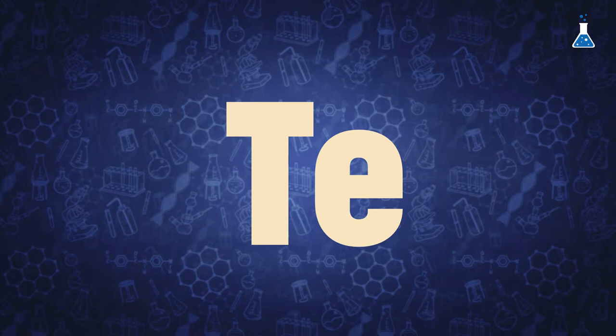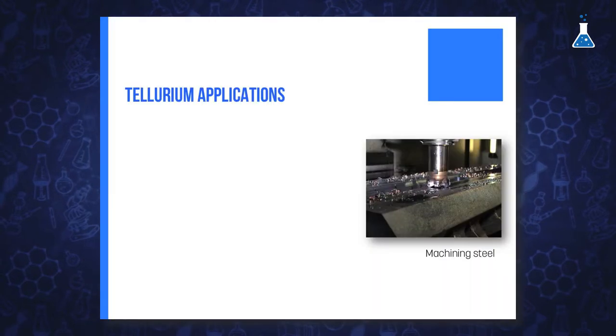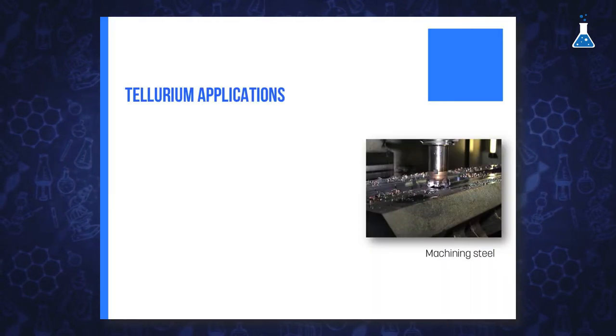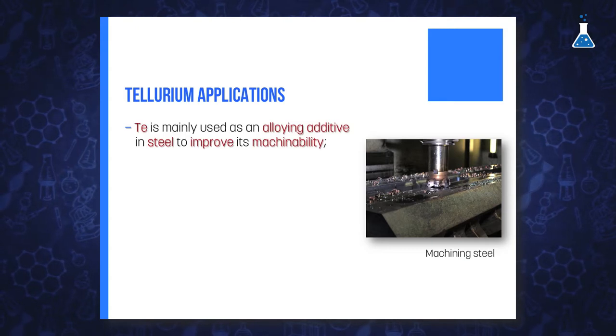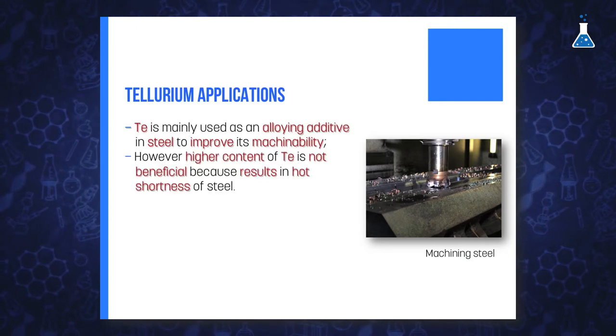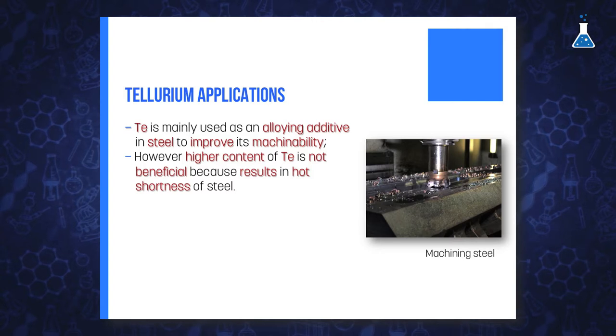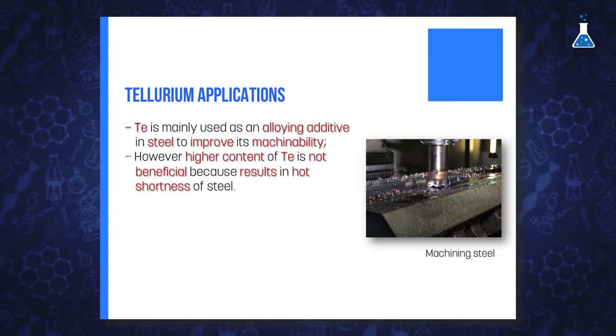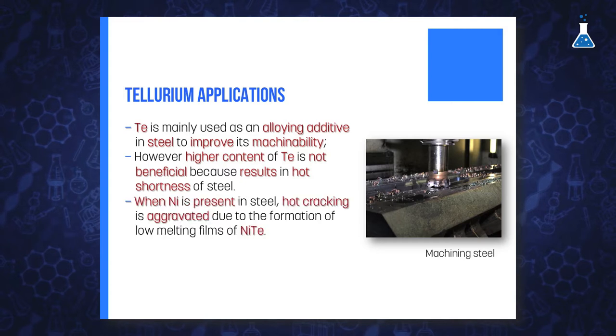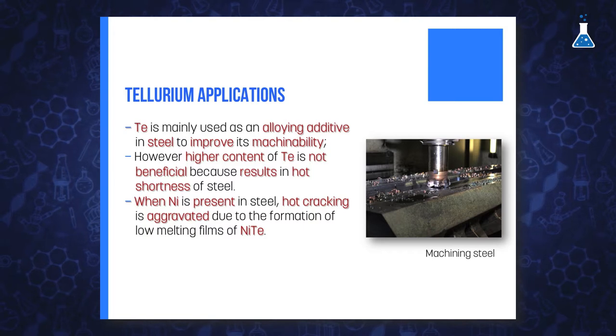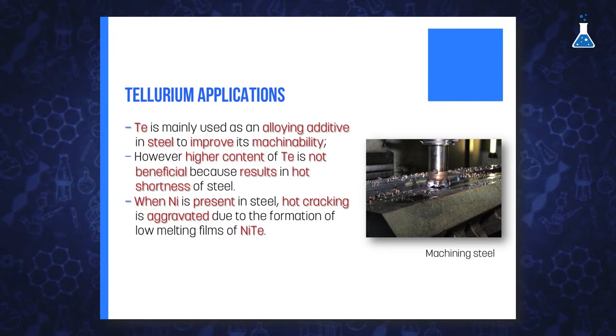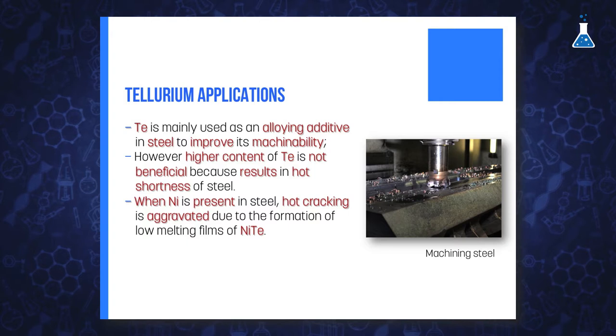But let's start our discussion with Tellurium, which is mainly used as an alloying additive in steel to improve its machinability, being found in lower amounts because higher content of Tellurium results in hot shortness of steel. Interestingly, hot cracking is also aggravated when nickel is present in steel because this forms very low melting fields of nickel Telluride.